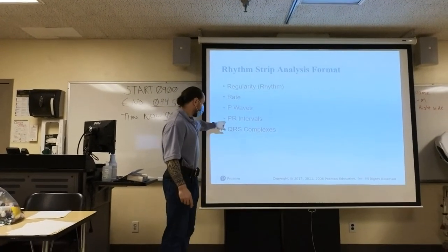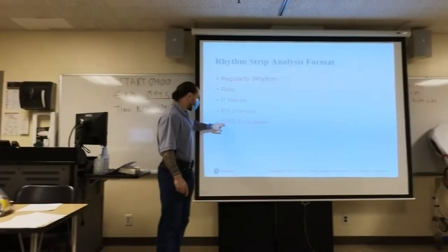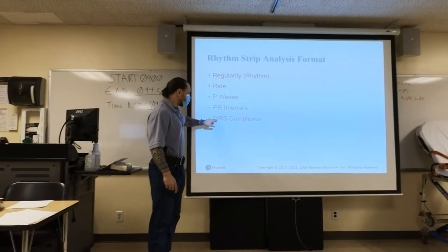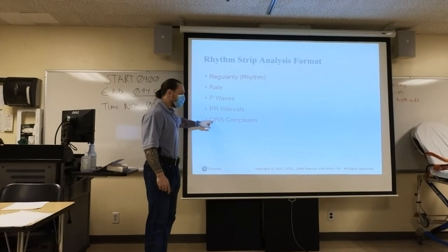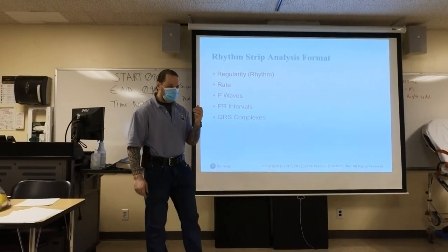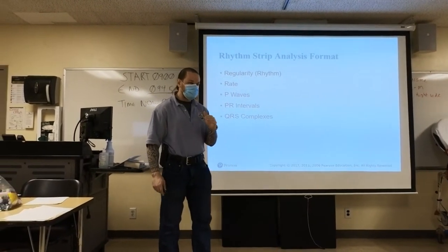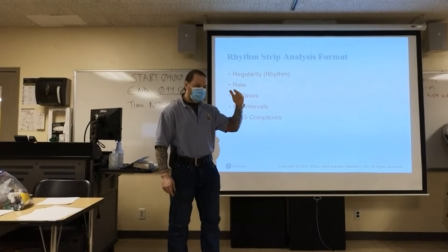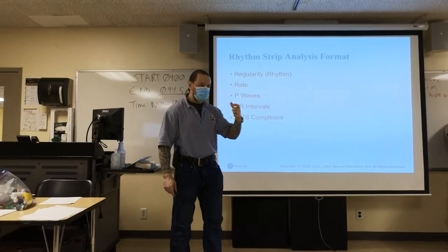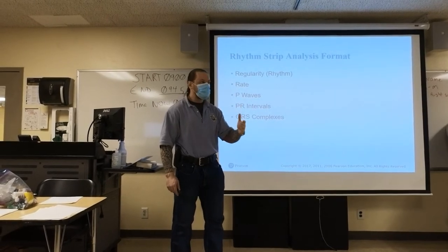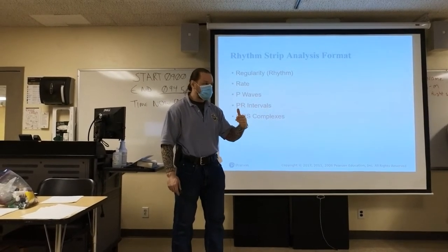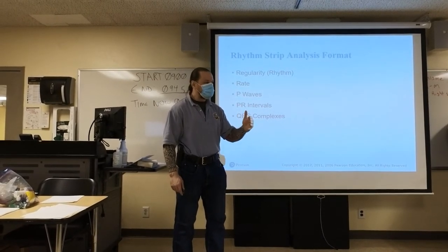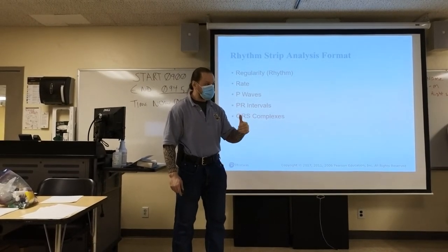Then we're going to measure our QRS complexes. This tells us if it's narrow — less than 0.12 seconds — it's coming from above the ventricles. If it's wider than 0.12 seconds, it's probably ventricular in nature, or maybe it's lower in the junction.